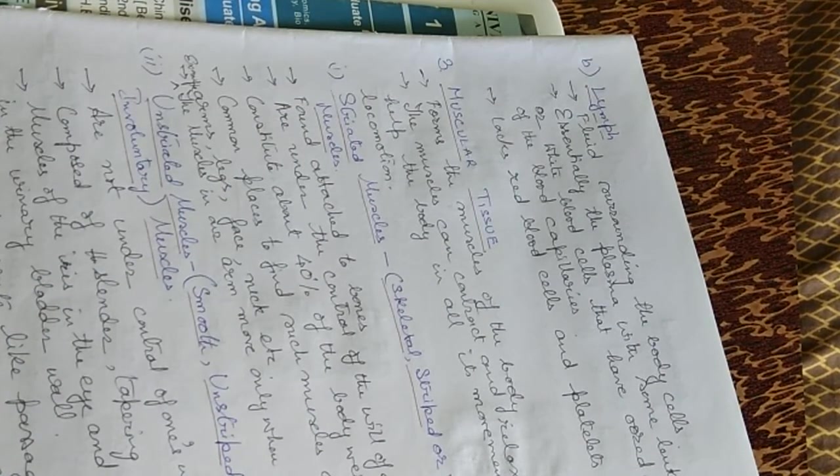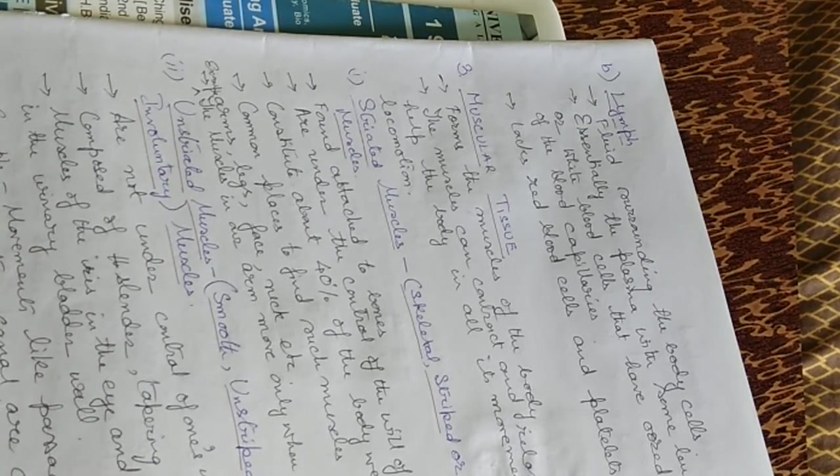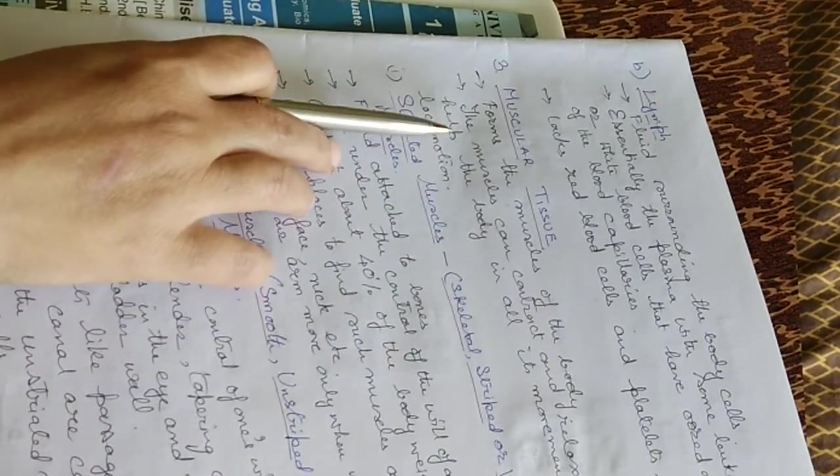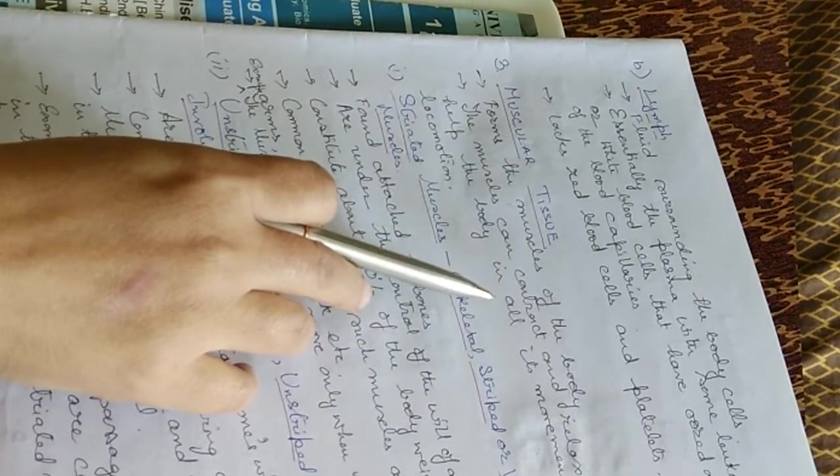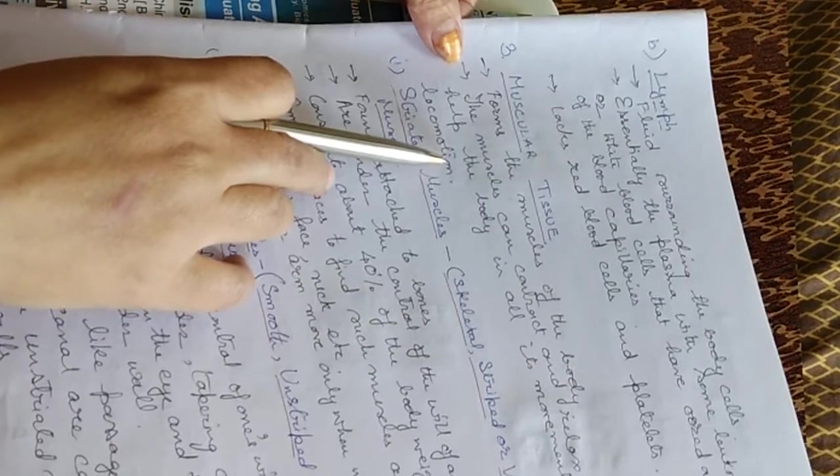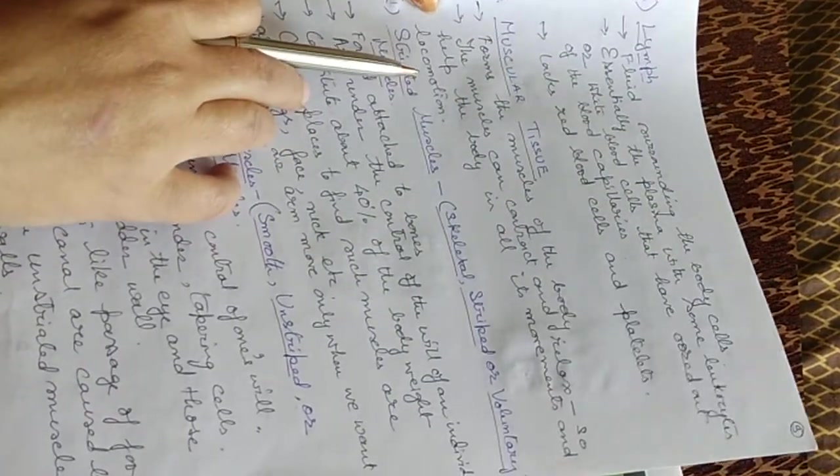We come to muscular tissue. Muscular tissue are of three types: striated muscles, unstriated, and cardiac muscles. Muscular tissue forms the muscles of the body. The muscles can contract and relax and so help the body in all its movements and locomotion.